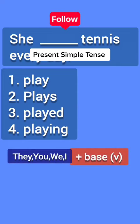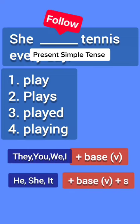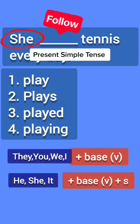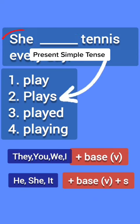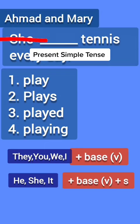How do we use the simple present tense? It's easy. With they, we, you, and I, we use the base verb without any addition. For she, he, and it, we use the base verb and add S to it. In our question the pronoun is she, so the answer is: she plays tennis every day.